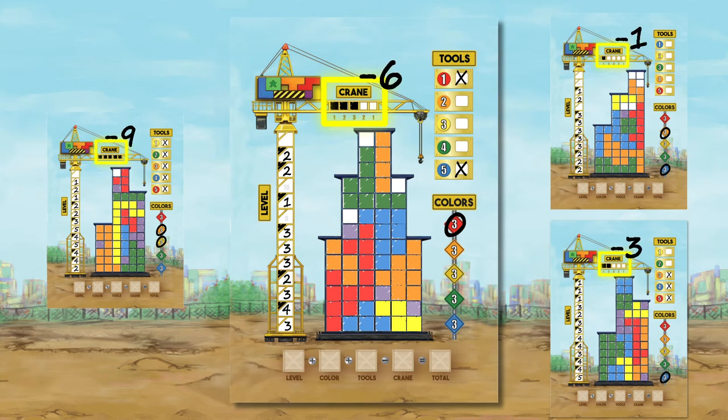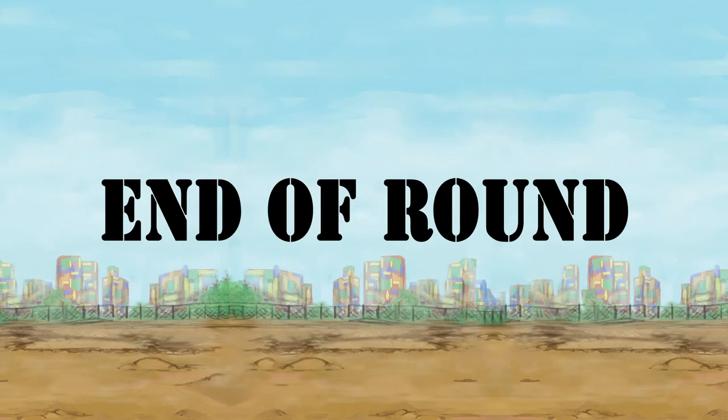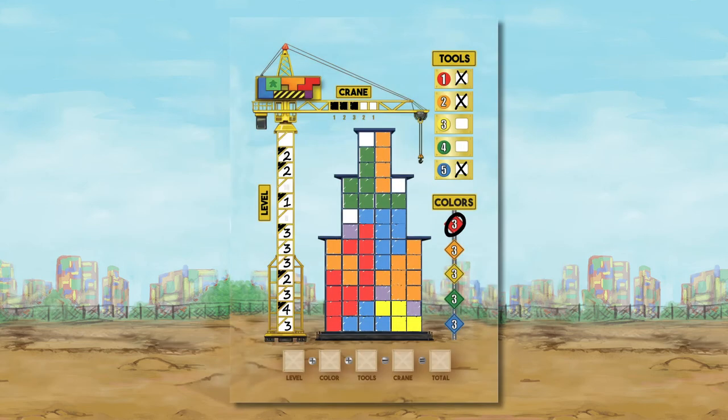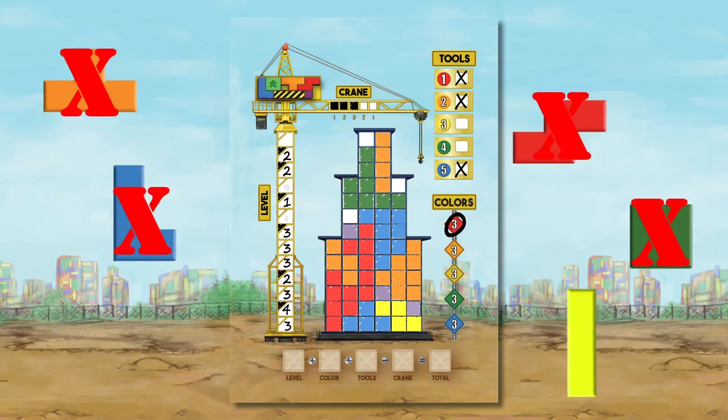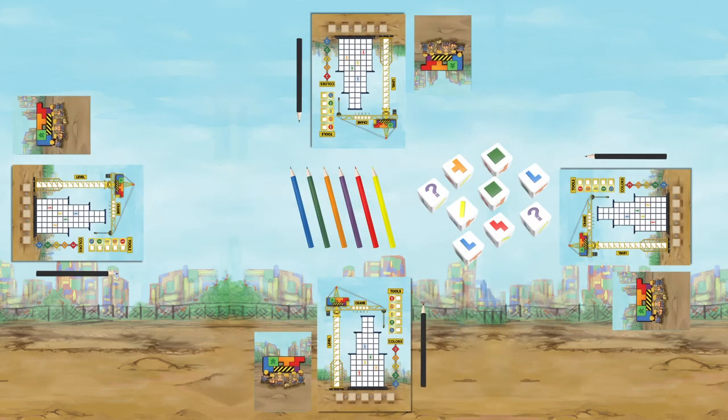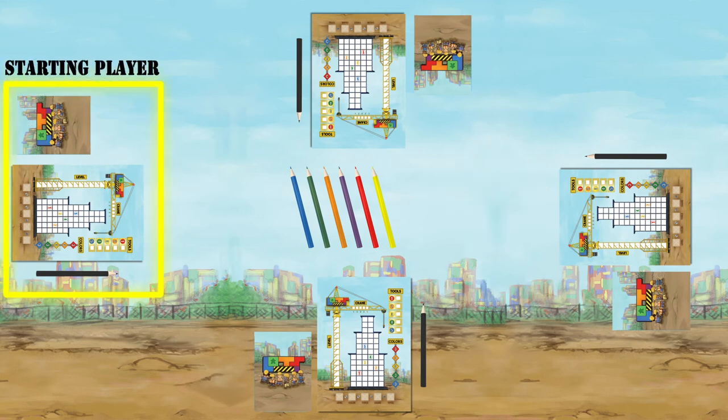Phase five is checked to see if the game has ended. In a round, a player who cannot legally place a block into their own structure will end the game. The round is completed and the points are tallied up. If all the players can place a block, then the game continues. The player left of the starting player becomes the new starting player and rolls all the dice, and another round begins.